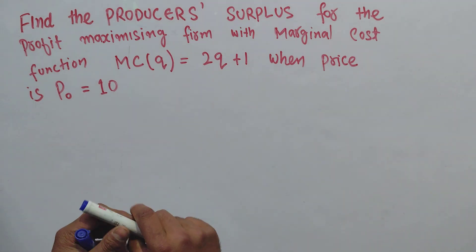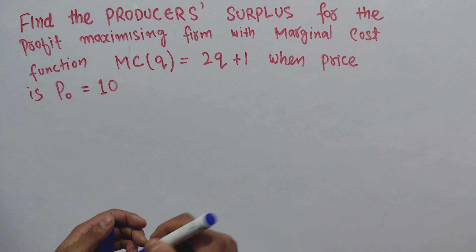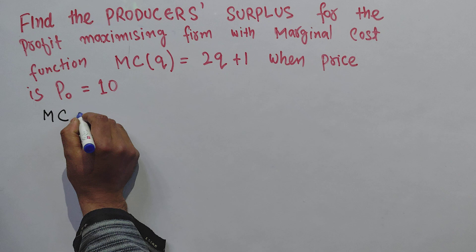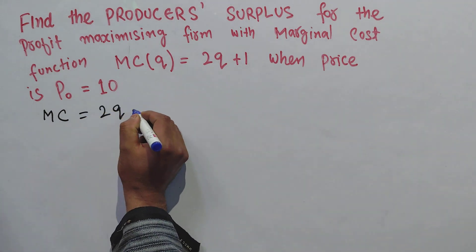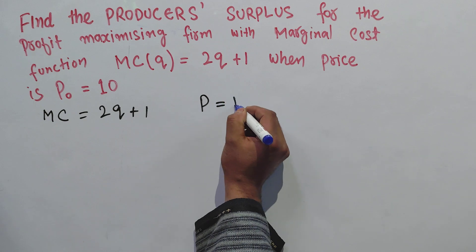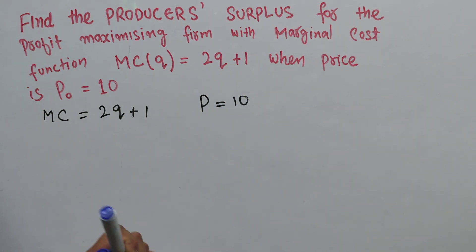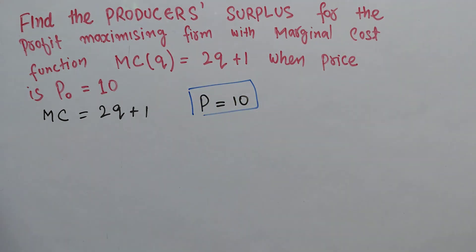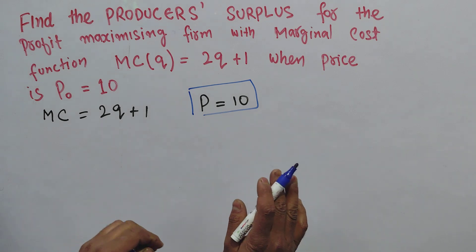To solve this, let us write what we are being given. We are given the marginal cost of the firm is equal to 2Q + 1, and also we are told that the initial price is $10. Now we assume that this is a perfectly competitive firm here.